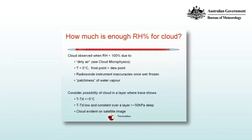There's also the issue of what happens below zero degrees Celsius — remember there's a difference between the frost point and the dewpoint. The frost point is saturation of water vapour over a plain ice surface, while the dewpoint is saturation over a plain liquid water surface. Below zero degrees Celsius, the frost point is higher than the dewpoint, meaning ice crystals can form even without 100% relative humidity. Additionally, radiosonde instruments can become inaccurate once they become wet or frozen. Finally, water vapour isn't necessarily uniform — it can be patchy and vary in space and time, so you may not always be sampling the air mass that produces the cloud you're observing.